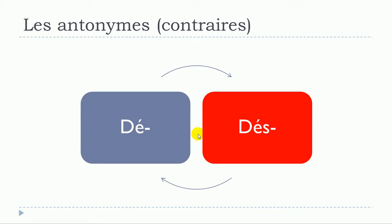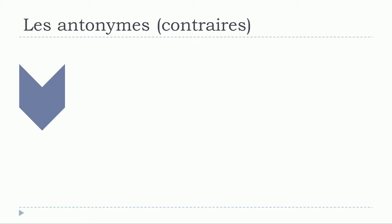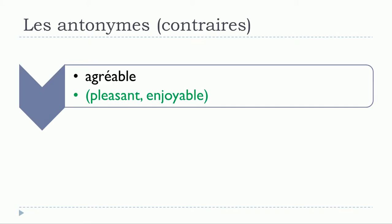Now we'll see the other group: DÉS (D-E accent aigu S). Keep in mind that we use this S because the words will start with a vowel or the sound of a vowel — that's normally the reason why we add this S with this prefix.